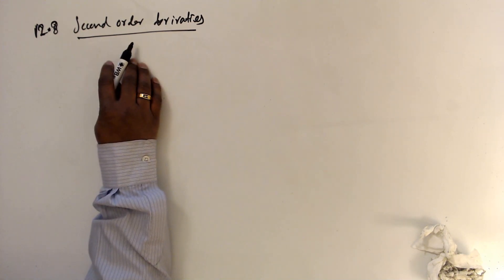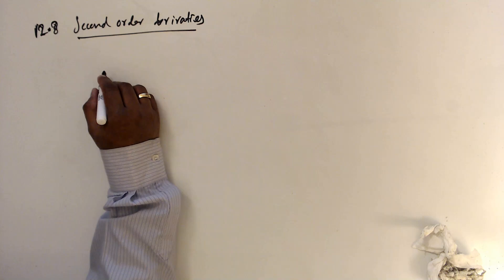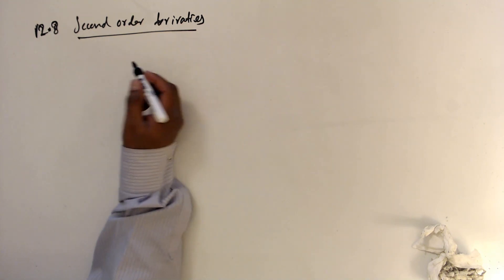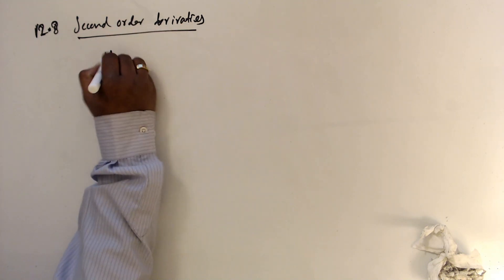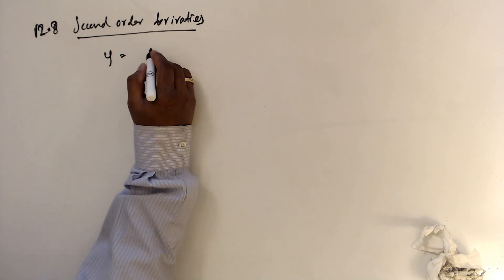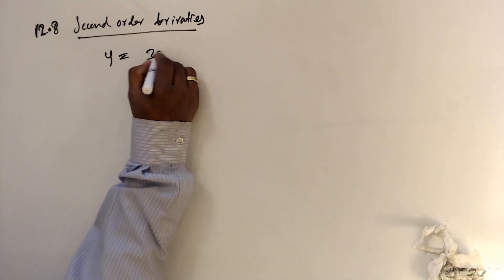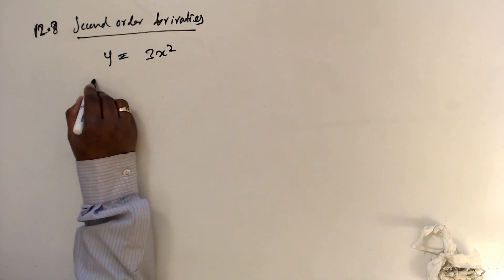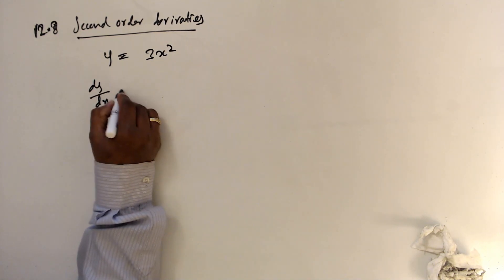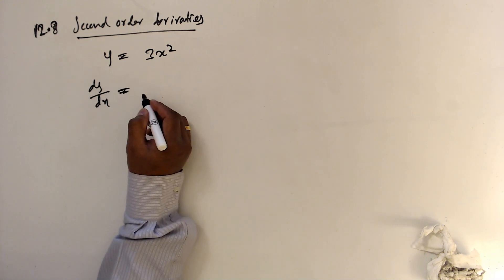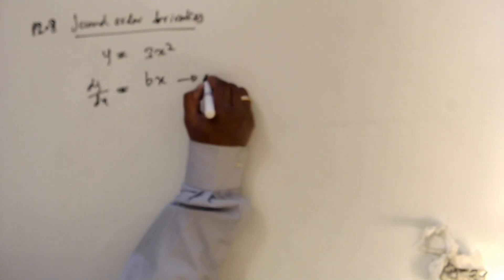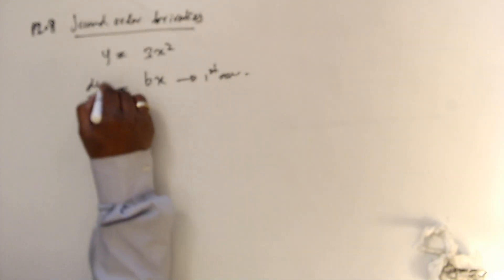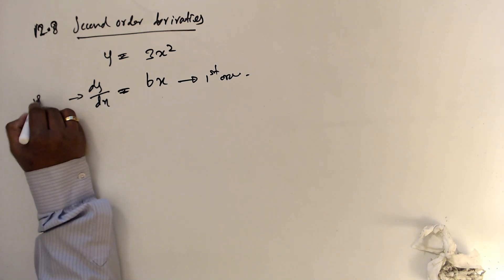12.8 second order derivatives. What is first order derivatives? We know already what is first order derivatives. Assume we have equation y equals 3x squared. When you differentiate with respect to x, this is going to be 6x. So this is first order differentiation. Dy by dx is first order.